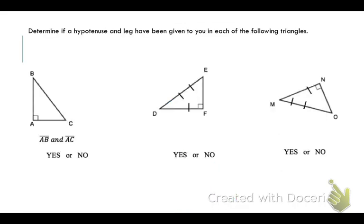Let's determine if a hypotenuse and leg have been given in each of the following triangles. If given sides AB and AC in the first triangle, those two are both legs — not a hypotenuse and a leg — so the answer is no. In the next triangle, sides DE and DF are given. DE is opposite the right angle, so it is the hypotenuse — yes, a hypotenuse and a leg have been given. In the last triangle, sides MN and MO are given, and MO is opposite the right angle, so yes, this is also a hypotenuse and a leg.